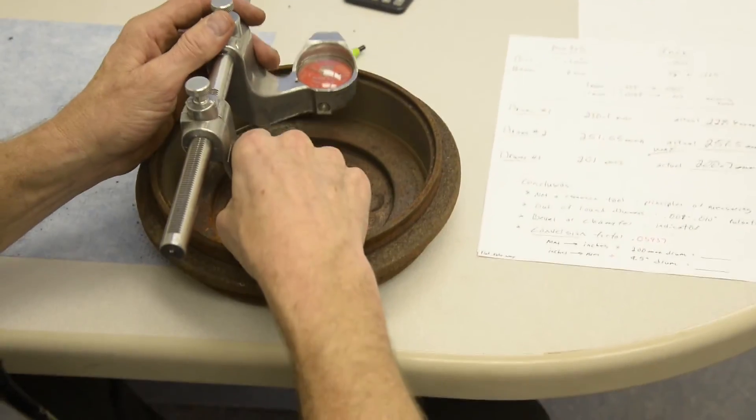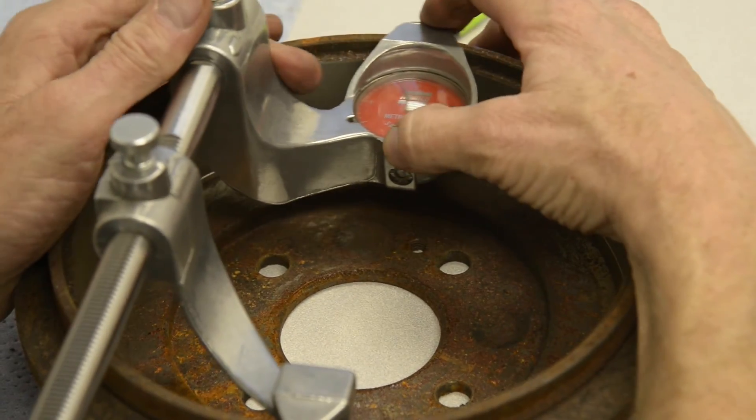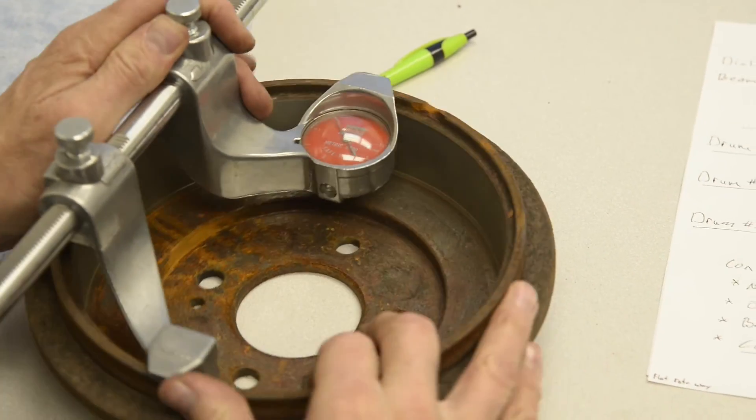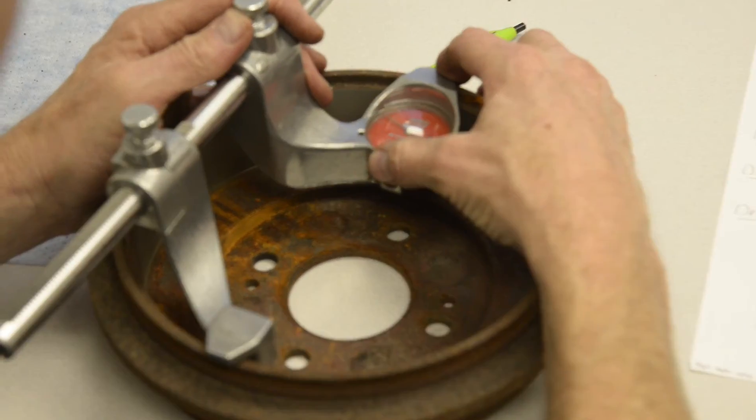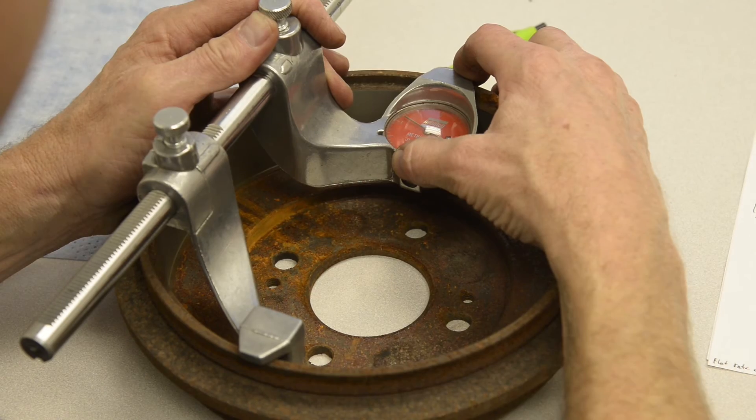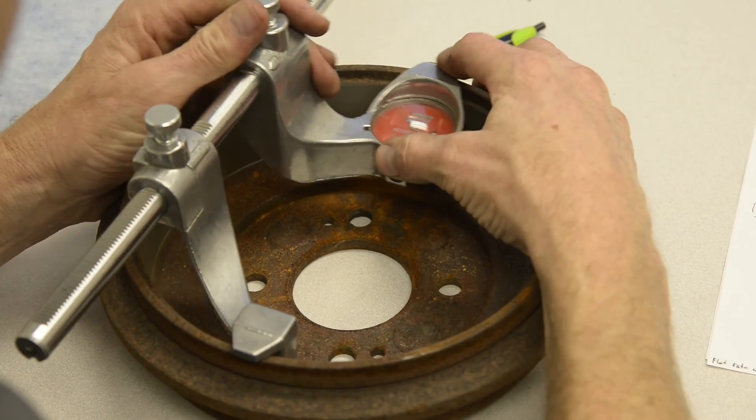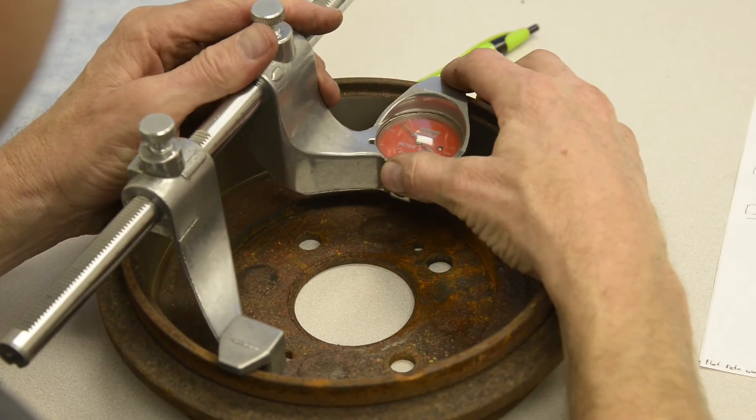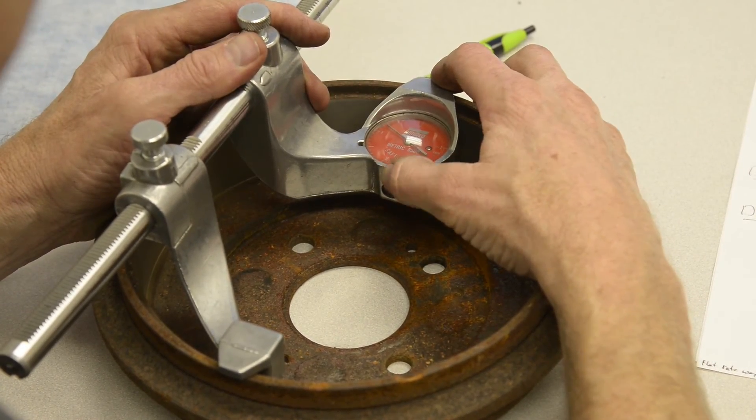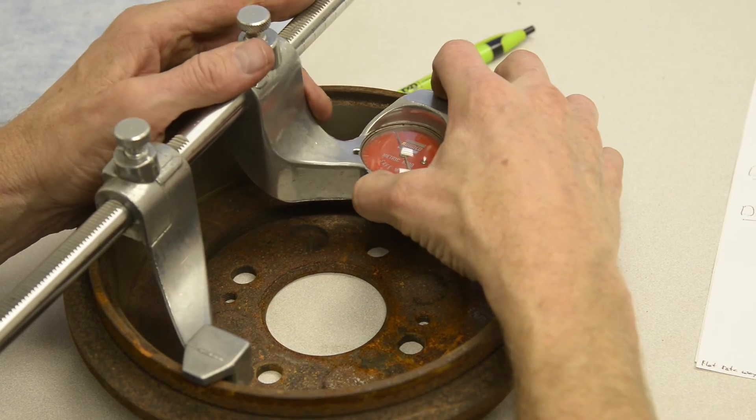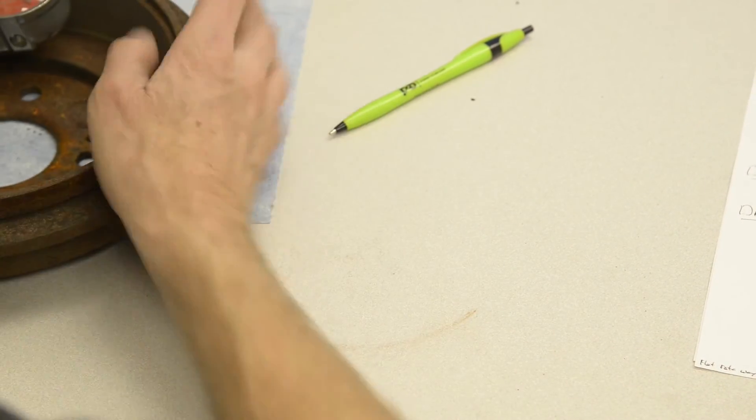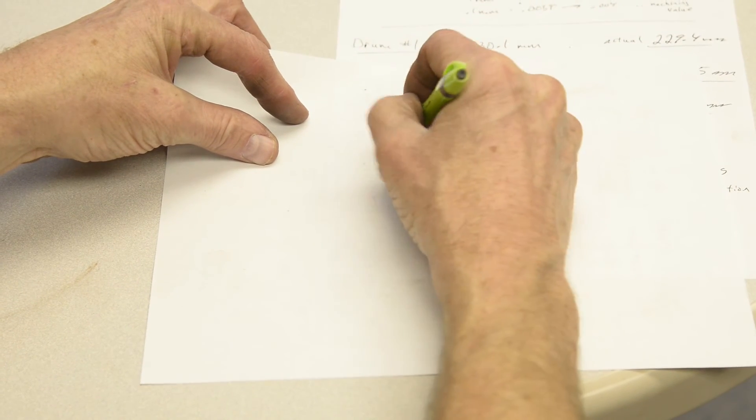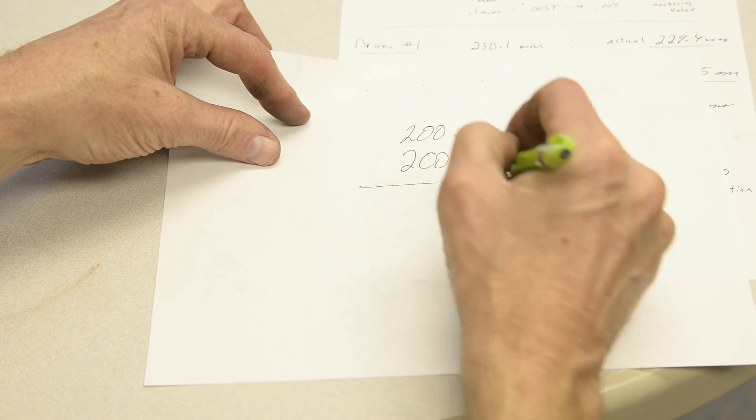To measure out of round, all I simply do is take my reading like we found earlier. This was 200.7. And you rotate the drum, maybe a third or a fourth, and measure and compare. Still measuring 0.8 above now. I'm going to rotate it again, and almost 0.8 above. Back to here, just over 0.7. Where was my smallest area? Looks like that was my smallest area. So the amount of difference - 200.8 was my largest, 200.7 was my smallest - 0.1 millimeter.